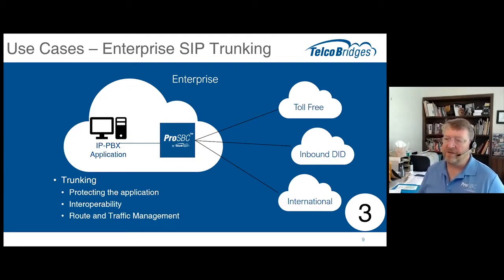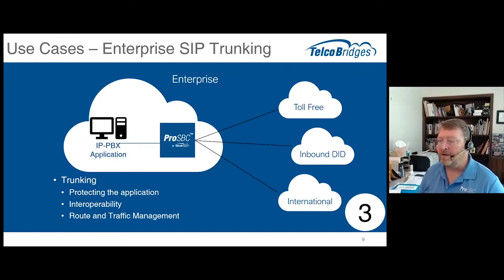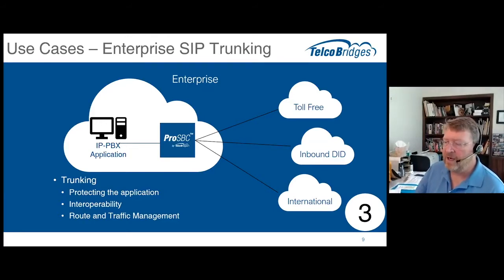And lastly is routing. With outbound calls, the IPPBX sends an outbound call and the session border controller can take on the responsibility of figuring out which one of the operators is going to handle that outbound call — load balancing, routing, and handling operators going out of service and routing traffic to a different operator. All these things are part of an enterprise SIP trunking offer.